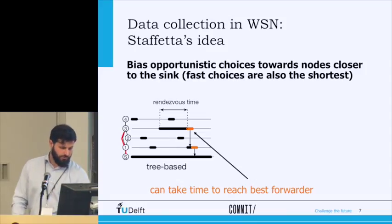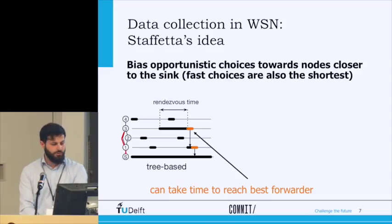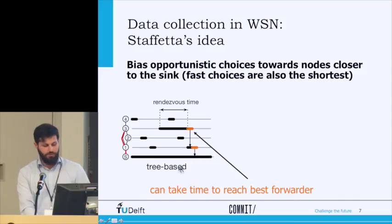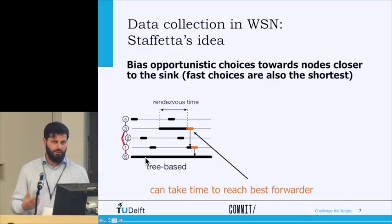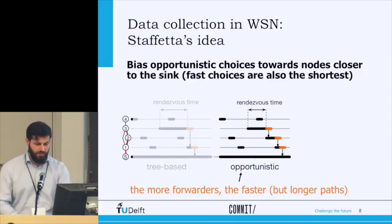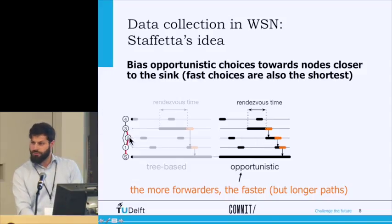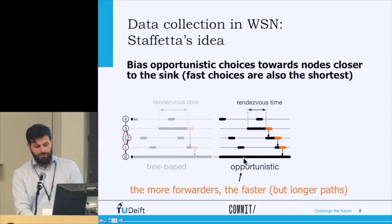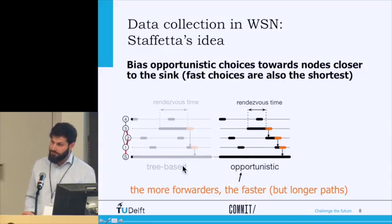Let me give an example. In a tree-based approach, node three needs to deliver its packet to the sink. It wakes up and waits until node one, the best forwarder, is awake. This takes a lot of time — the rendezvous time. After node one wakes up, it immediately forwards to the sink, which is always on. In the opportunistic version, the first node to wake up is node two, which is in node three's forwarding set. Node three immediately forwards to two, two forwards to one, and so on. The rendezvous time is shorter, but because the shortest path is not always used, the final latency is not very different from the tree-based approach — generally better, but not yet the best.